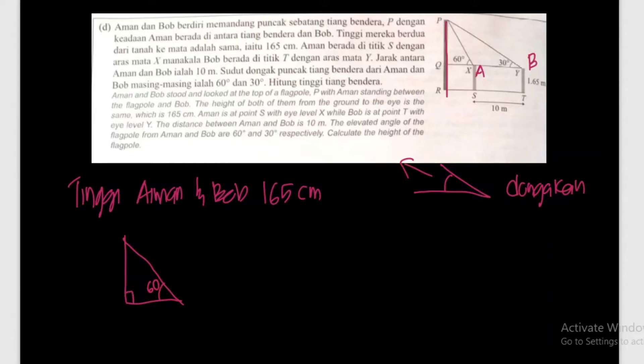Ni adalah Aiman, sudut dia 60°, sudut 90°. Kita nak cari tiang bendera ni. Yang kedua ni Bob, sudut dia 30°, sudut 90°. Tiang bendera tinggi P kepada R kita tak tahu, tapi kita tahu tinggi daripada Q ke R.